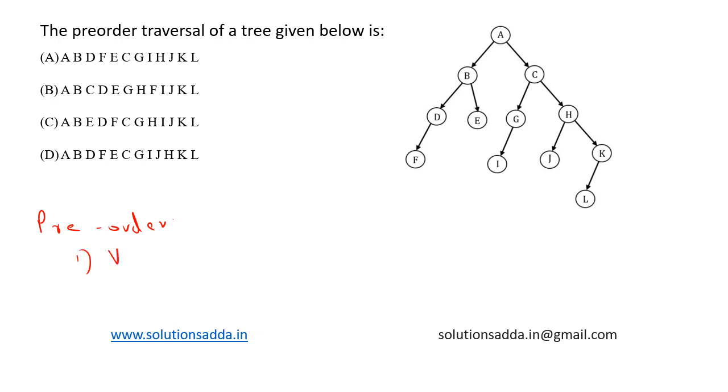In pre-order, we first visit root and print it, then we visit left subtree, then we visit the right subtree. This continues iteratively, or we can say recursively.